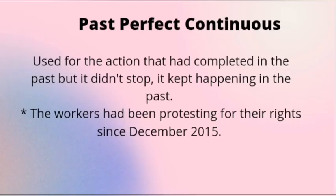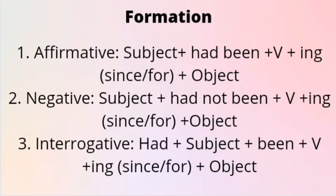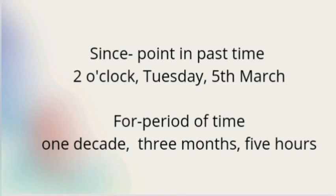Our next tense is past perfect continuous. This tense is used for an action that had been ongoing in the past — for example, the workers had been protesting for their rights since December 2015. For the formation: if affirmative, begin with subject, had been, verb plus -ing, since or for, plus object. If negative: subject, had not been, verb plus -ing, since or for, plus object. If interrogative: had, subject, been, verb plus -ing, since or for, plus object.